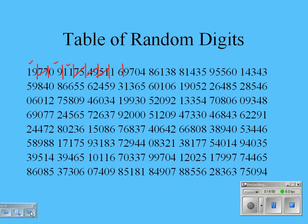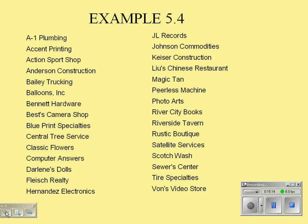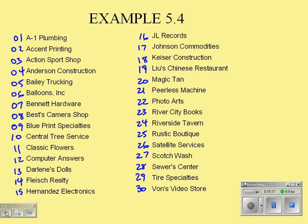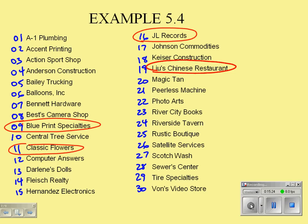The numbers have to be different because Joan wants to interview five different companies. So the five numbers are: 19, 9, 11, 16, and 4—those are the five companies that Joan should interview as an SRS representing the 30 companies she works for.